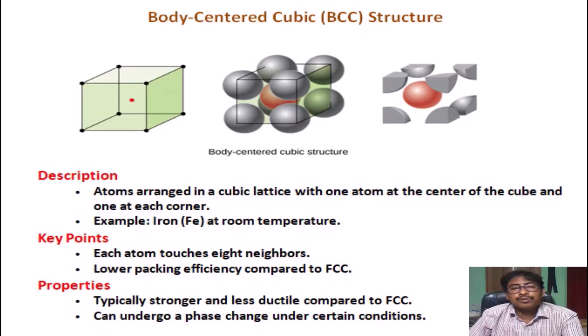Description. Atoms arranged in a cubic lattice with one atom at the center of the cube and one at each corner. Example: Iron (Fe) at room temperature. Key Points. Each atom touches 8 neighbors.